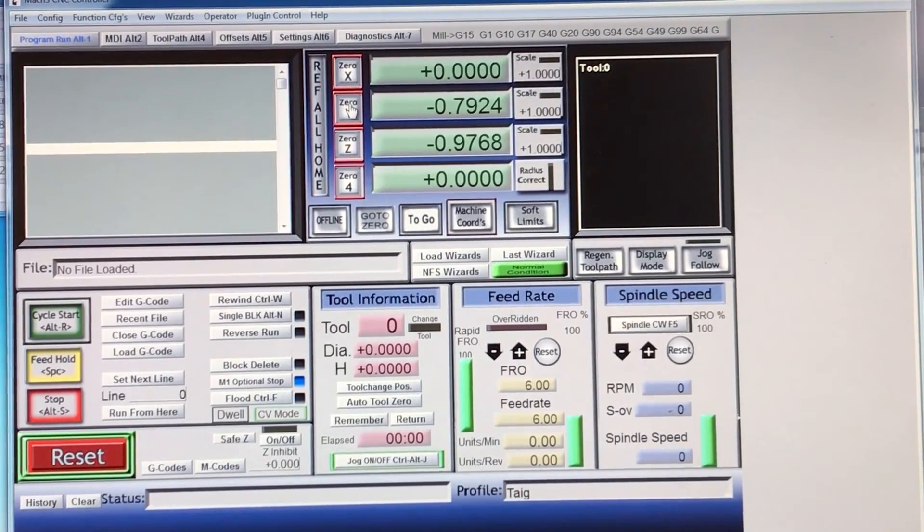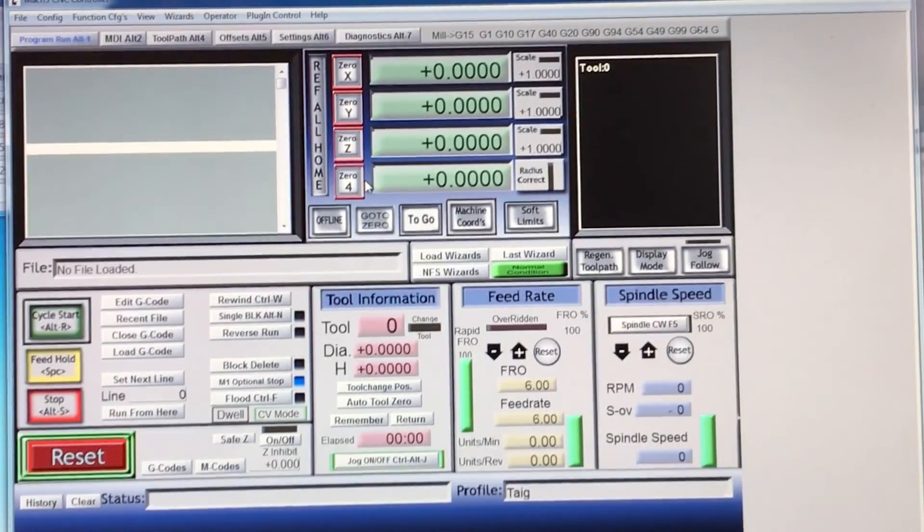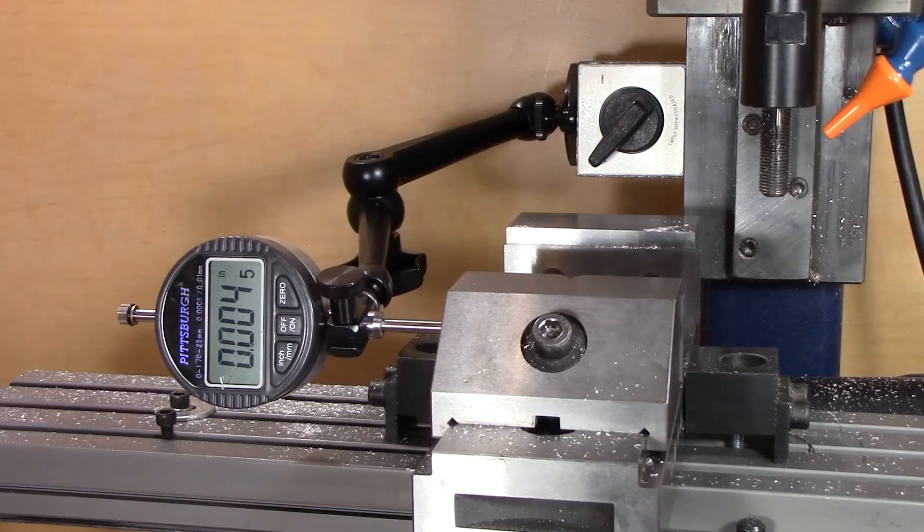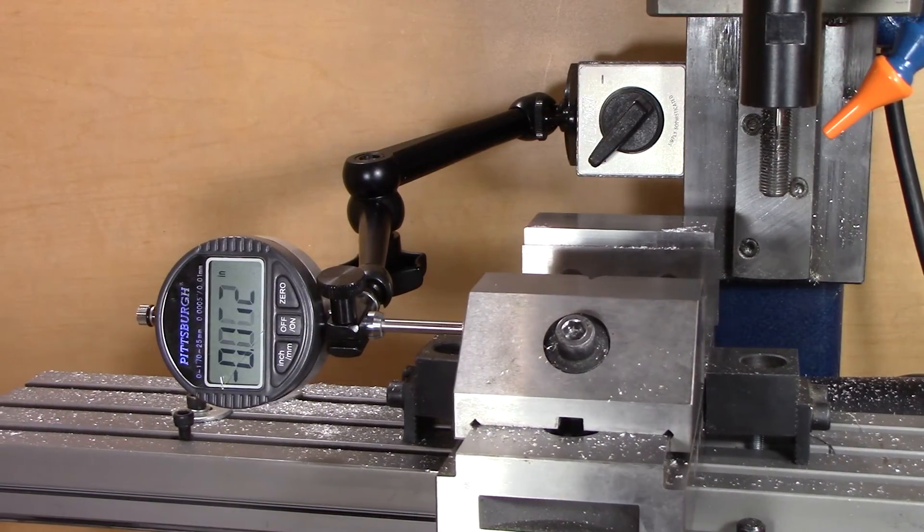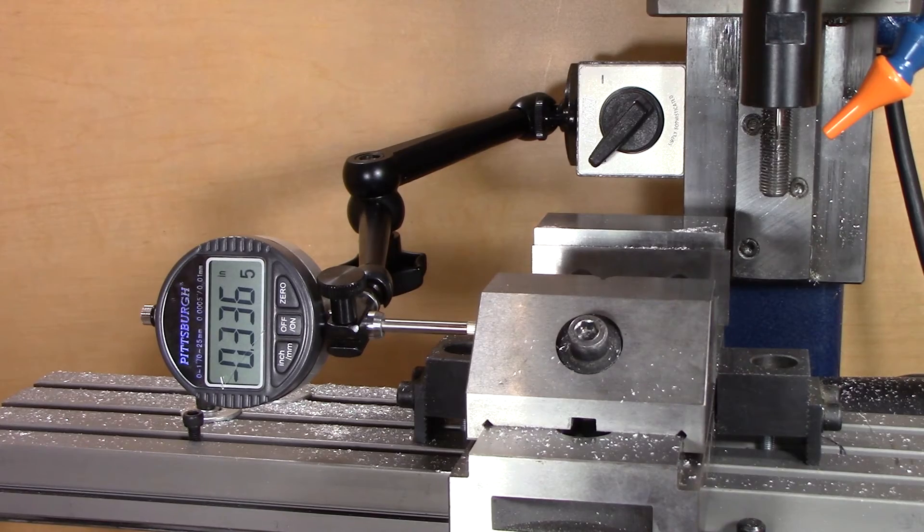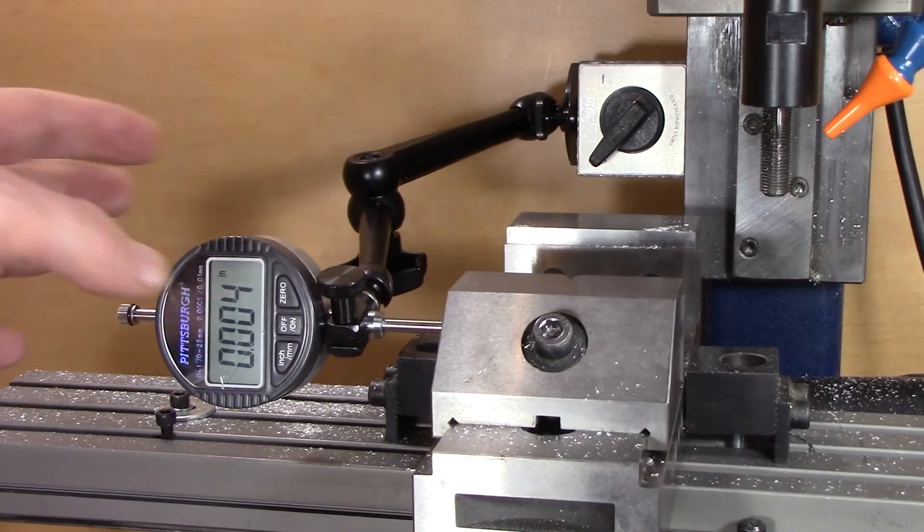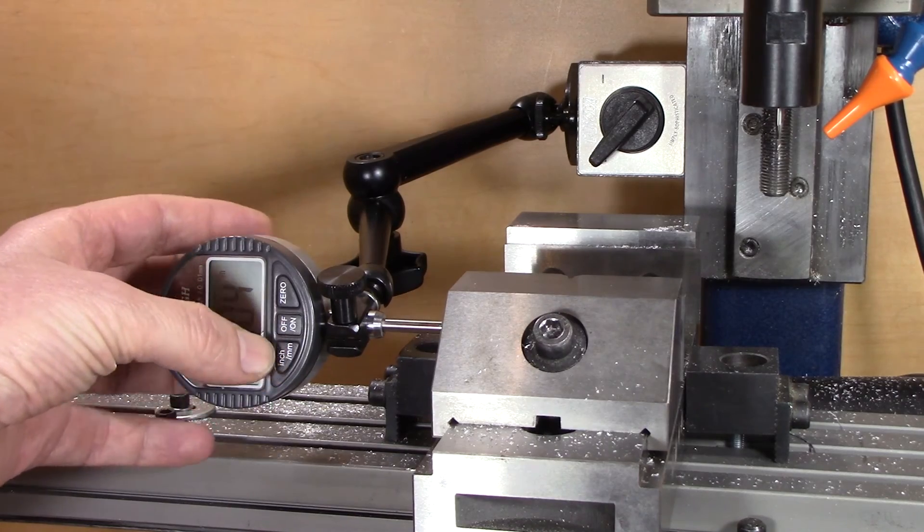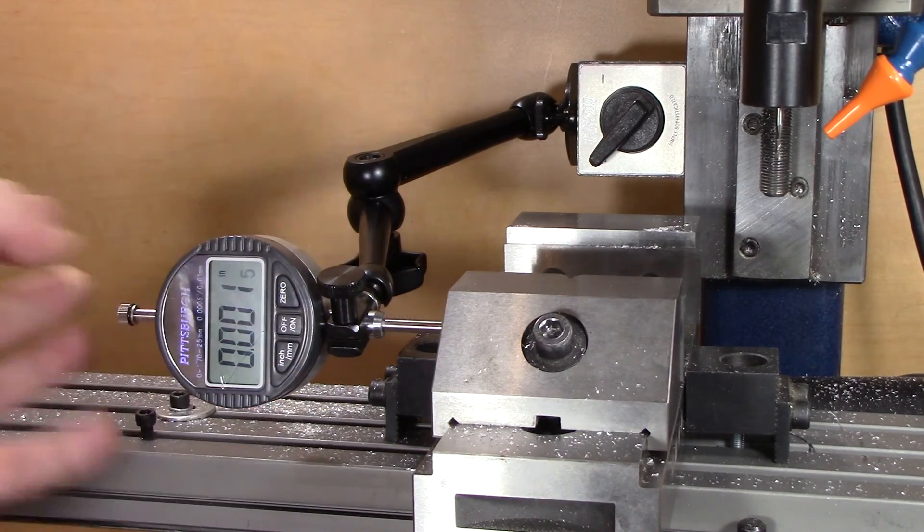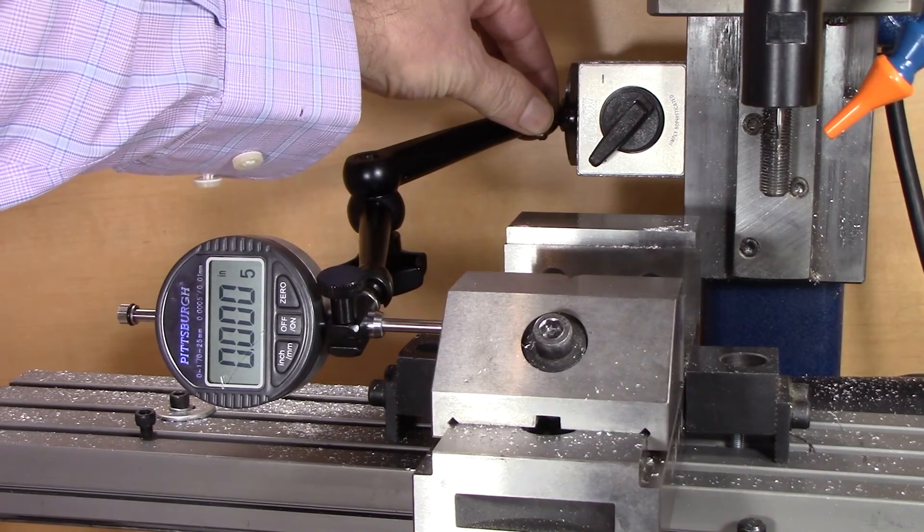Let me zero everything again and go ahead to the right. Go to zero. Now it's at four thousandths, so that's actually good because we came from the other direction. Let's get this as close to zero as I can. I'd say that's pretty good.